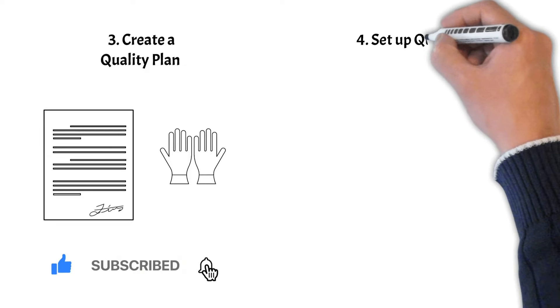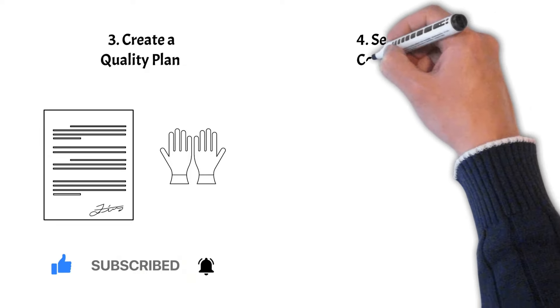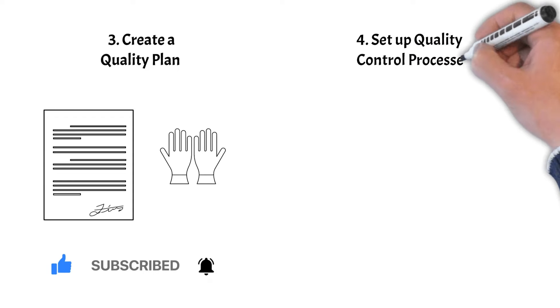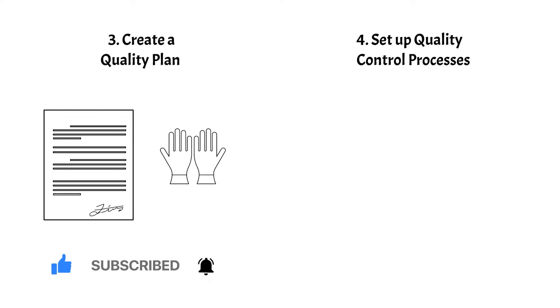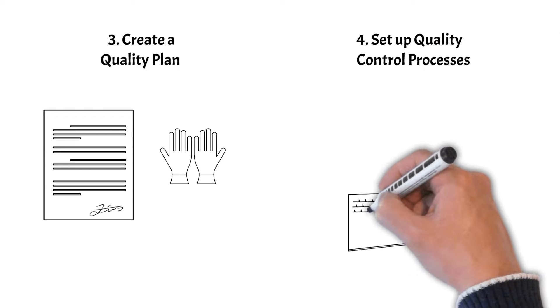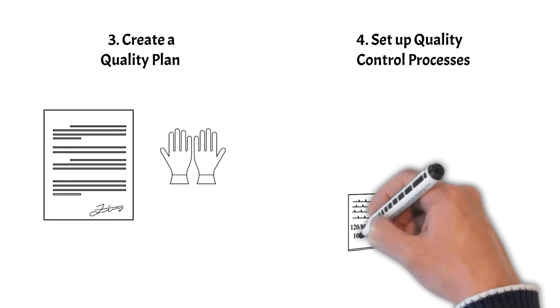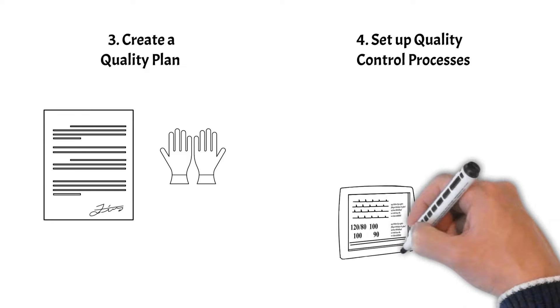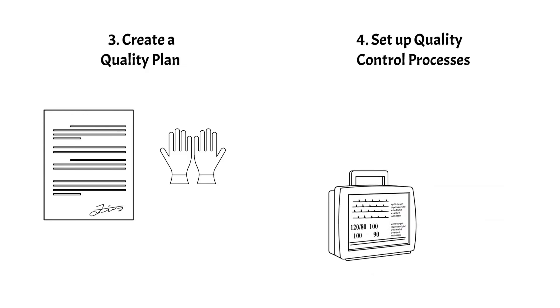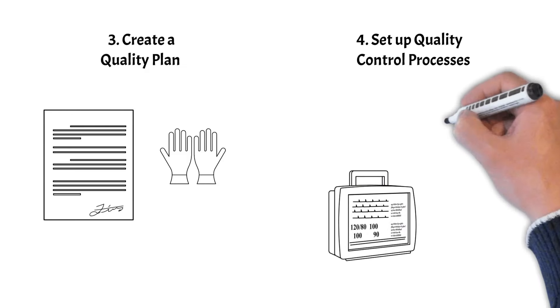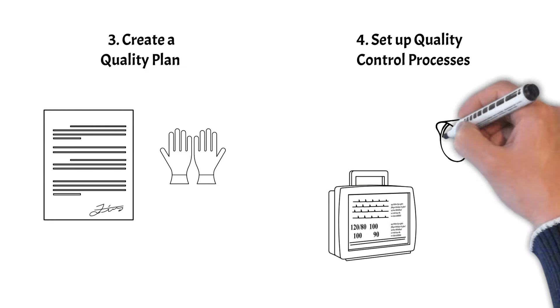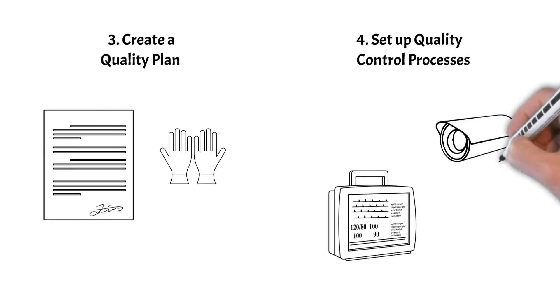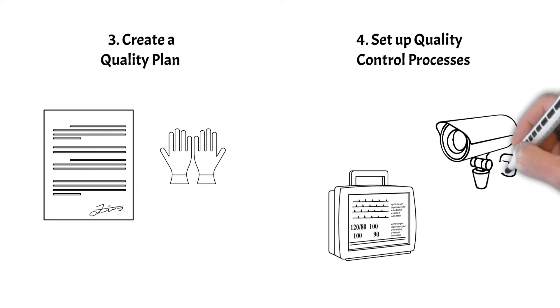Fourth, set up quality control processes. Implement quality control processes to monitor and inspect project work regularly. These processes help identify and correct defects, ensuring that the project stays on track.